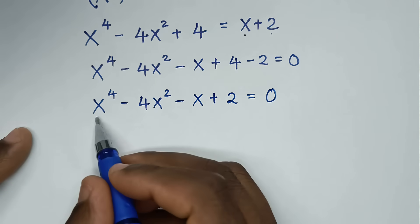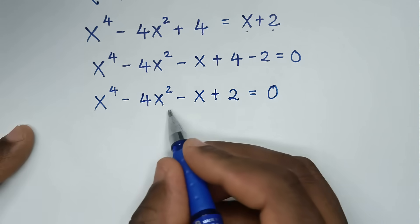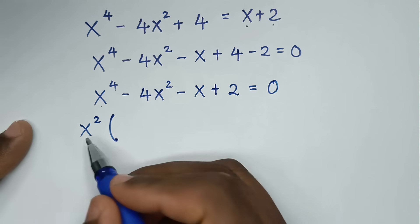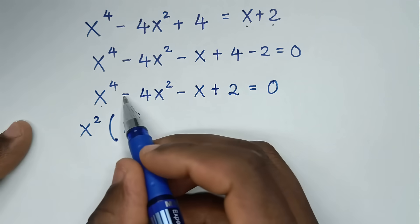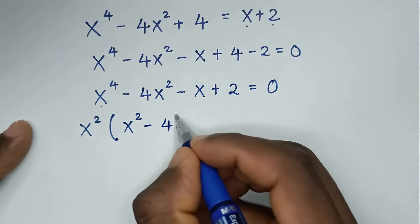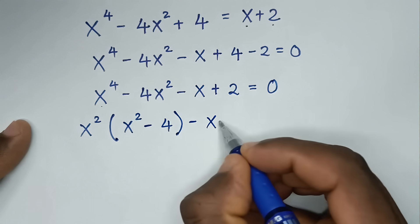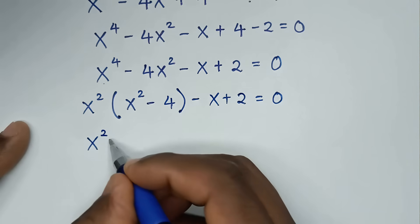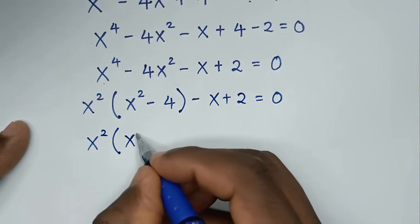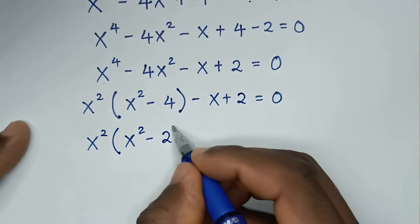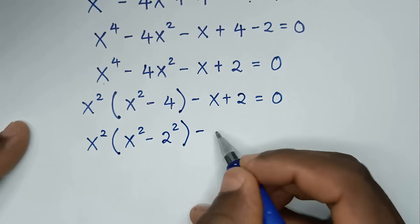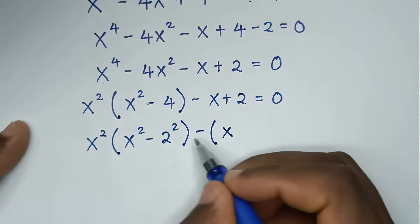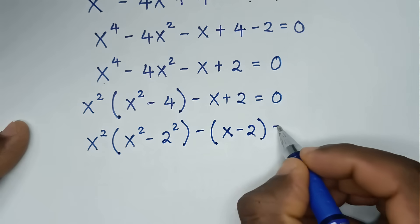In the next step, from here, x⁴ minus 4x², x² is common. So we'll take x² out of bracket: x⁴ divided by x² is x², minus 4x² divided by x² is minus 4, bracket, then minus x plus 2, is equal to 0. Then it will be x² bracket, x² minus 4, and 4 is 2², bracket, minus, here we take minus out of bracket, so minus x divided by minus is positive x, and 2 divided by minus is minus 2, bracket, is equal to 0.